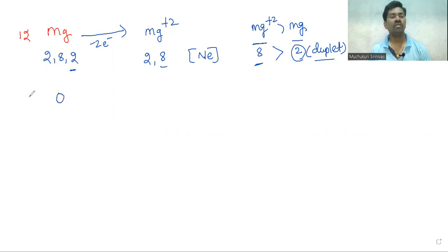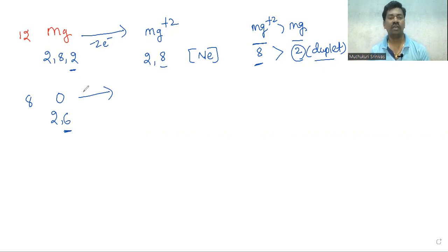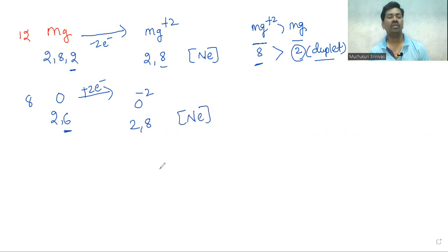Oxygen has atomic number 8, so its electronic configuration is 2, 6. The valence shell has six electrons. Oxygen gains two electrons to achieve 8 electrons in its valence shell, becoming O minus two with electronic configuration 2, 8 — the neon electronic configuration.